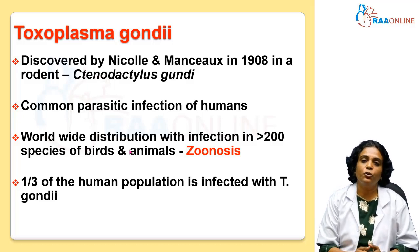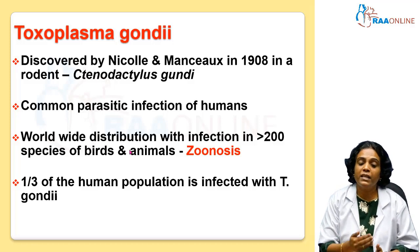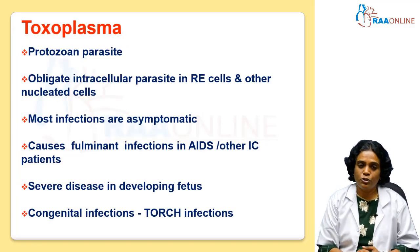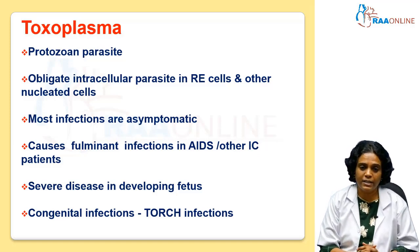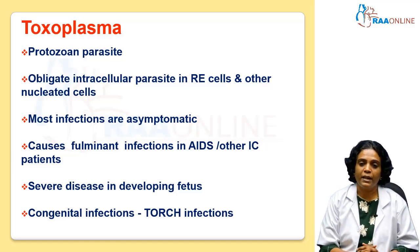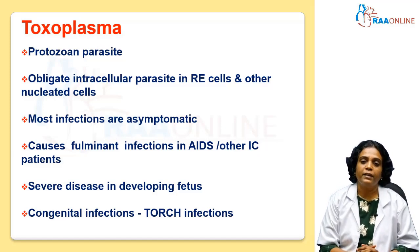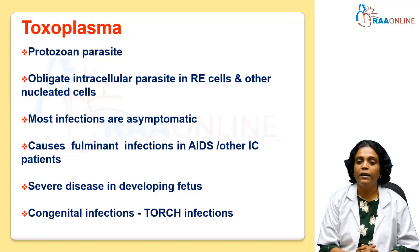They say one third of the human population is infected with this Toxoplasma infection, but most of the infection will be asymptomatic in nature. It is a protozoan parasite — a coccidian parasite — and it is an obligate intracellular parasite. Usually it lives inside the reticuloendothelial cells and also other nucleated cells, but sometimes you will be able to appreciate them extracellularly too. The disease gets manifested in immunocompromised individuals, especially in HIV patients.